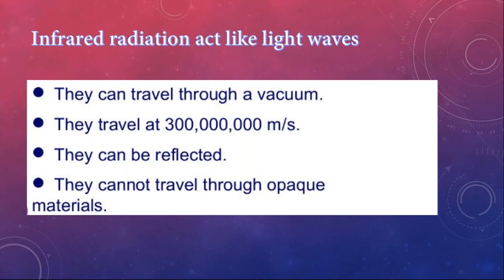Infrared radiation is not the only wave coming from the sun — light also travels from the sun to the earth. Both travel at 300 million meters per second in vacuum. They can be reflected and absorbed, and they cannot travel through opaque objects. If an object has a shiny and smooth surface, most of the wave will be reflected. But if the surface is black or rough, most of the infrared radiation or light will be absorbed, and less will be reflected.